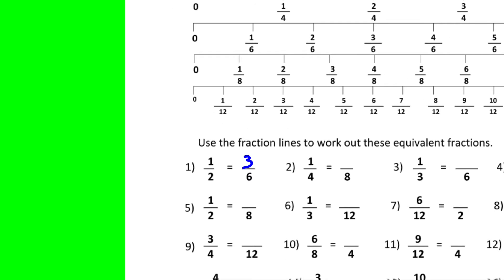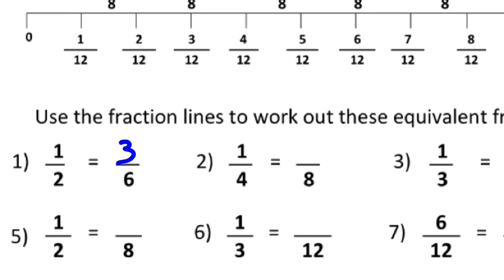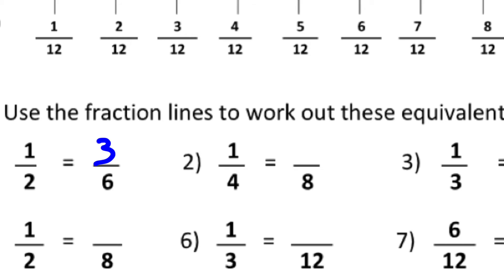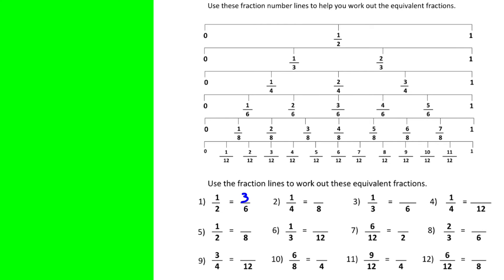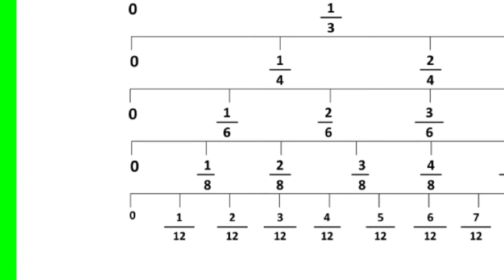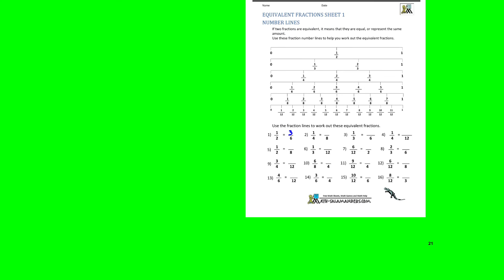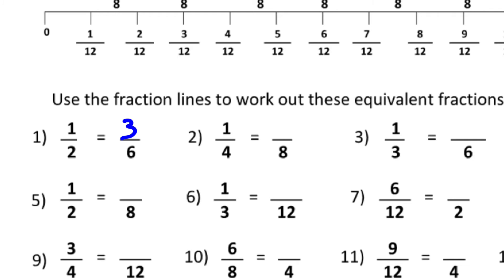If you look at another example, like 1 over 4 is equal to some number out of 8, well if you look at the fraction 1 over 4, and how does that compare in eighths? Well it's the exact same size as 2 over 8. So the missing number there is 2 over 8.